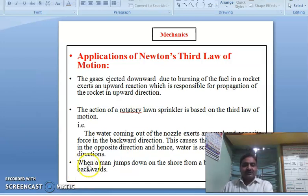Now one more, when a man jumps down on the shore from a boat, you know boat, suppose you are traveling by boat and once you come to the shore, once we jump down on the shore, then what happens? So the boat moves backward where your body is going to exert the force in opposite direction on the boat. So that boat is going to move or accelerate in backward direction.